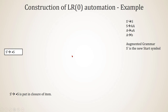I will explain the construction of the LR0 automaton with an example. We have the grammar: S → AA, A → small a, A → B. This is the original grammar. We add the augmented production S' → S, making S' the new start symbol.